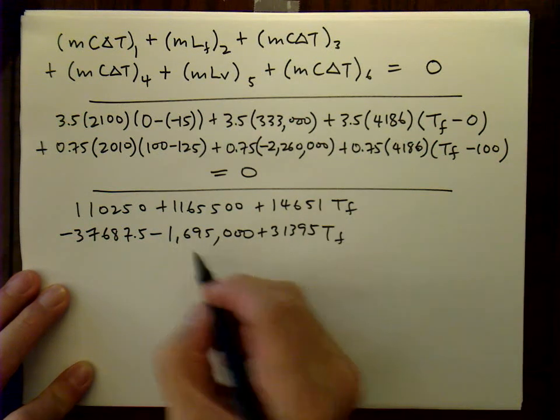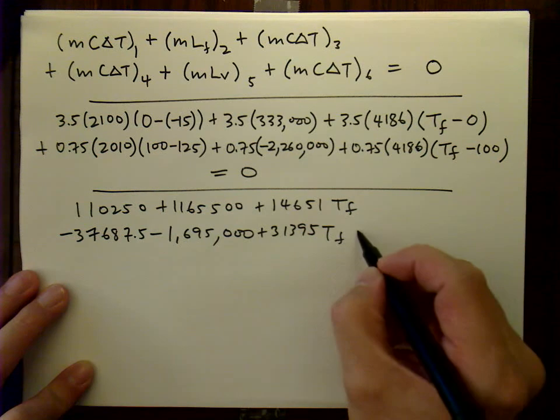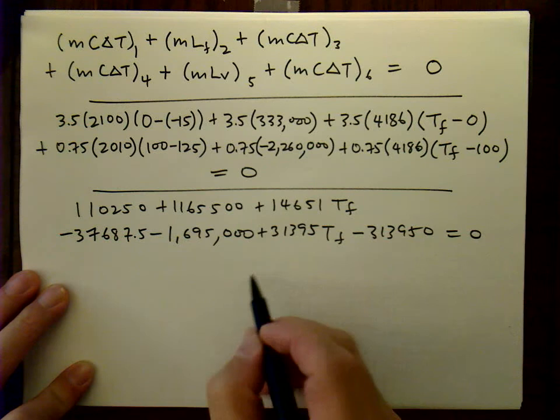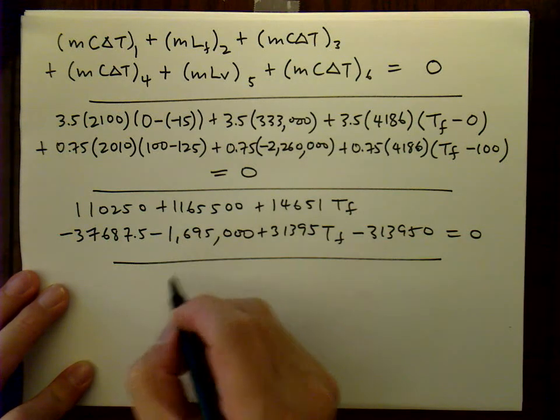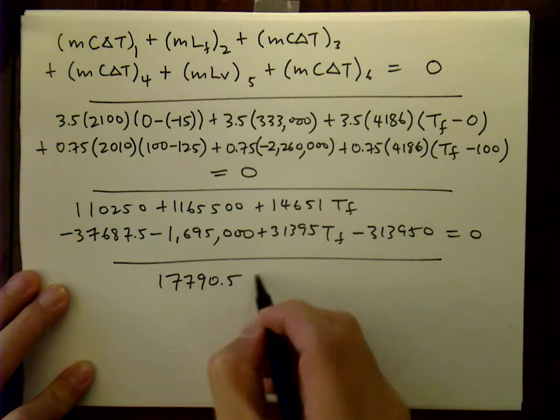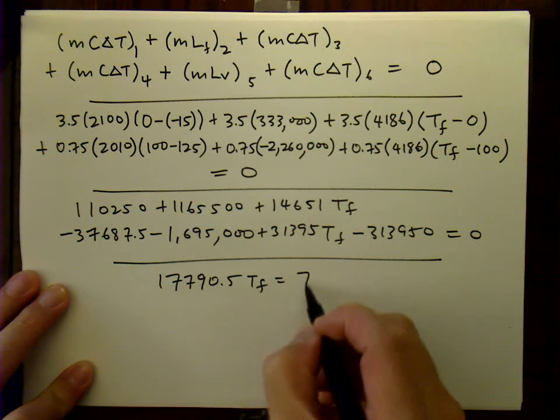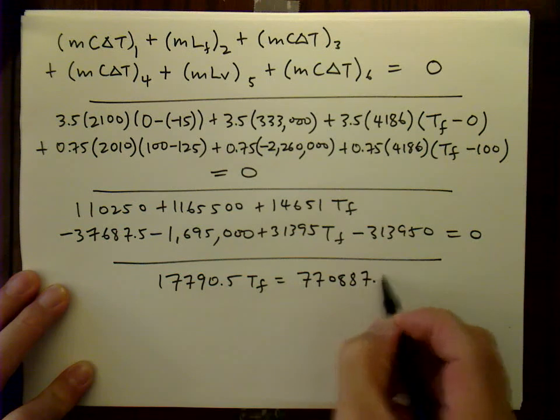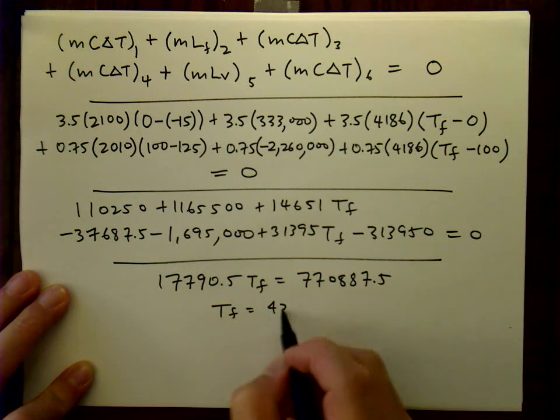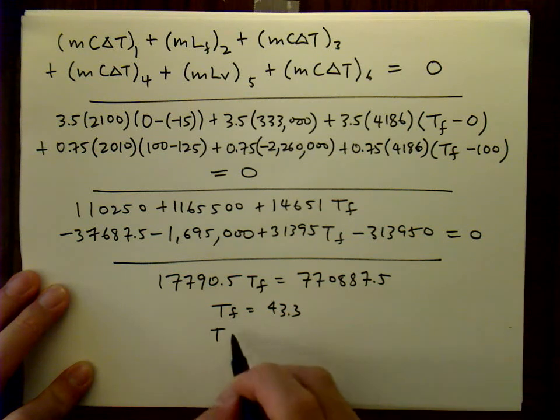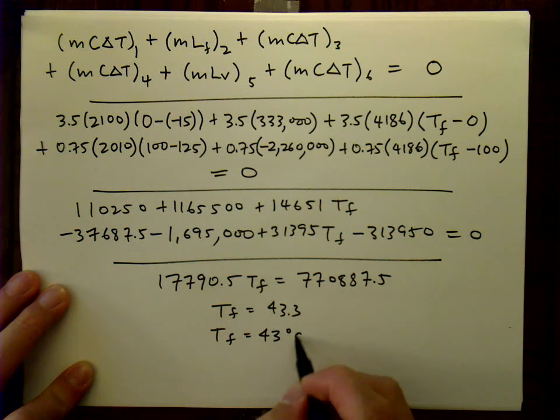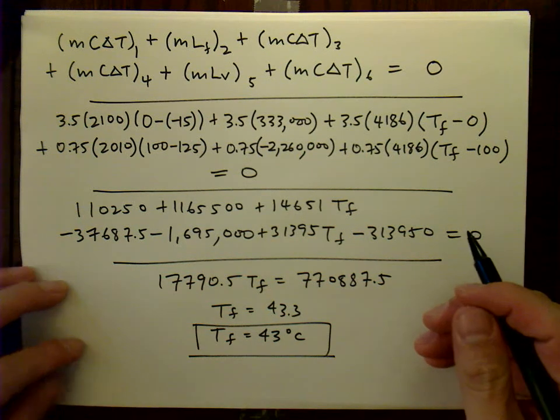For really large numbers, I like to put in commas. It just helps me keep track of the digits. And once you simplify, you get the following. And the final temperature, 43.3. If you round to two significant figures, in this case, it's 43 degrees Celsius. And that is your final solution.